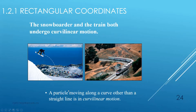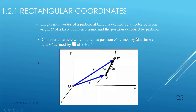A particle moving along a curve other than a straight line is undergoing curvilinear motion — simple as that. The position vector of a particle at time t is defined by a vector between the origin at point O of a fixed reference frame. We have axes x, y, and z as our fixed reference frame and the position occupied by the particle.